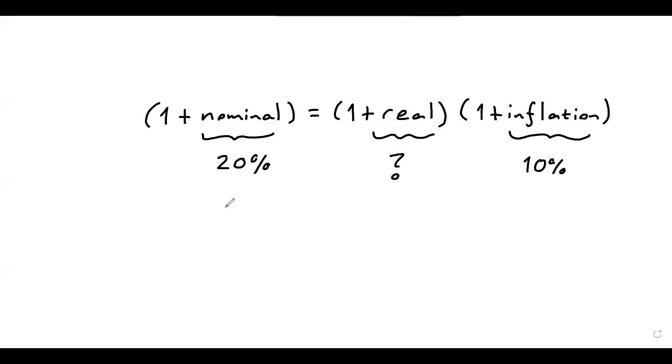So on the left-hand side, essentially, I've got 1.2 equals 1 plus the real rate, unknown in my equation, times 1 plus 1.1. So essentially, the real rate of return is 1.2, so the one over here. So I moved this one to the left-hand side by dividing, so 1.2 over 1.1, and subtracted this one. And if you calculate this, this will be 9.1%.